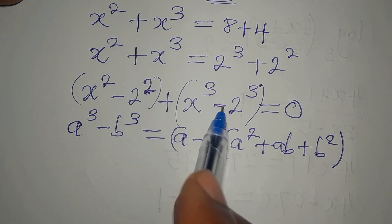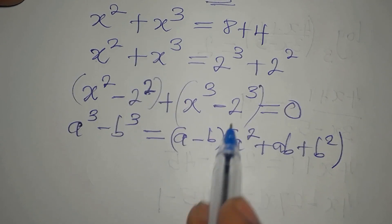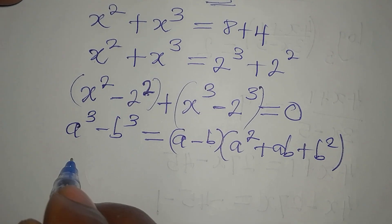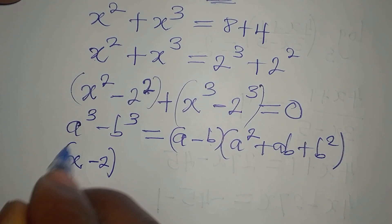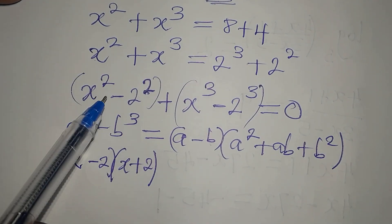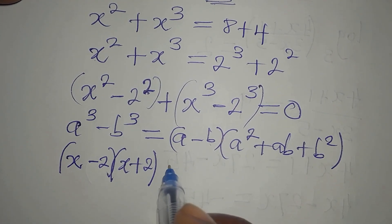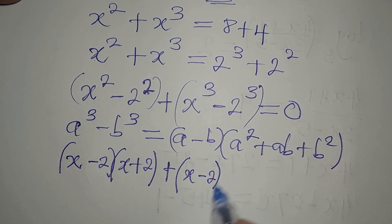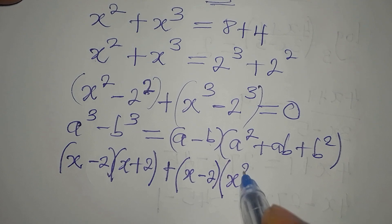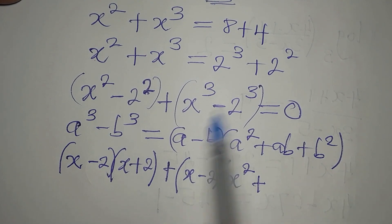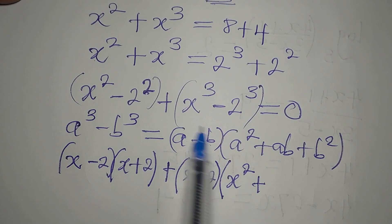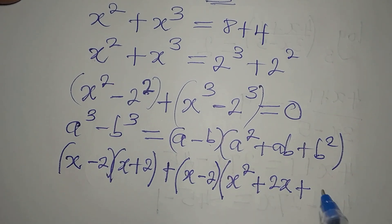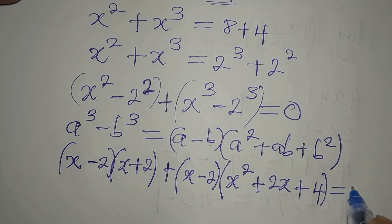Working with this, our a is x and our b is 2. Applying the difference of two squares gives us x minus 2 times x plus 2. For the difference of two cubes part, we get plus open bracket x minus 2, times x squared plus x times 2 which is 2x, plus b squared which is 2 squared equals 4.